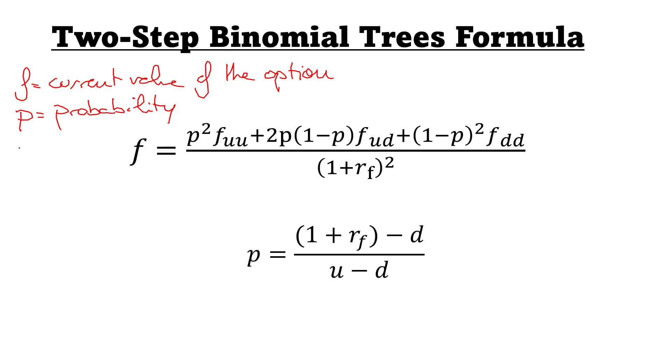Then we have RF, which is the risk-free rate. And then finally, we have U, which is the magnitude of an up jump, and D, magnitude of a down jump.